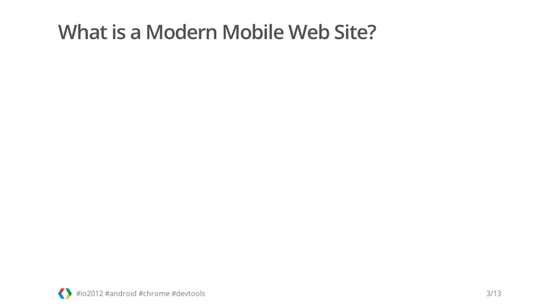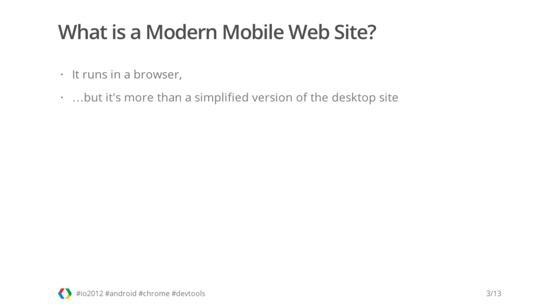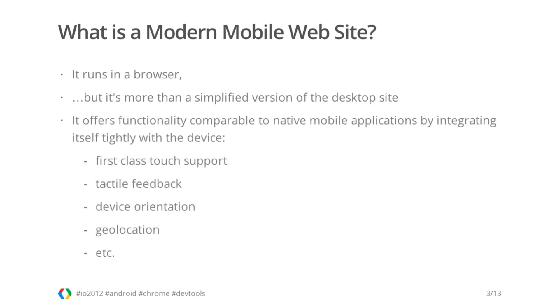Not surprisingly, a mobile website runs in a browser just as a regular website, but it's more than just a simplified version of the desktop website. A modern mobile website takes advantage of the fact that it runs on a mobile device and integrates itself tightly with it. Chrome for Android and other mobile browsers offer APIs that allow websites to implement first-class touch support, tactile feedback, and provide access to the current device state such as orientation and geolocation. This makes it possible to create websites that are very close by the look and feel to native mobile applications.